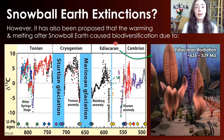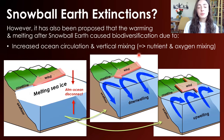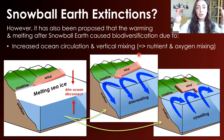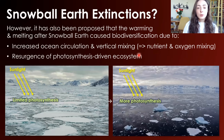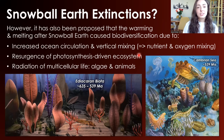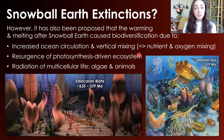However, it's mostly thought that the immediate aftermath of the Snowball Earth event was major biodiversification in the Ediacaran and Cambrian periods, likely caused by an increase in ocean circulation and vertical mixing after the ice melted. There was also a resurgence of photosynthesis-driven ecosystems and a radiation of multicellular life — certain algae and animals that had evolved just before or during the Snowball Earth event then radiated after, because multicellularity was a new and beneficial trait that drove further diversification.